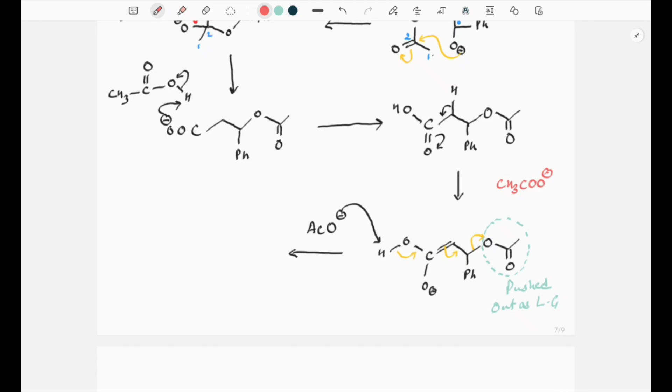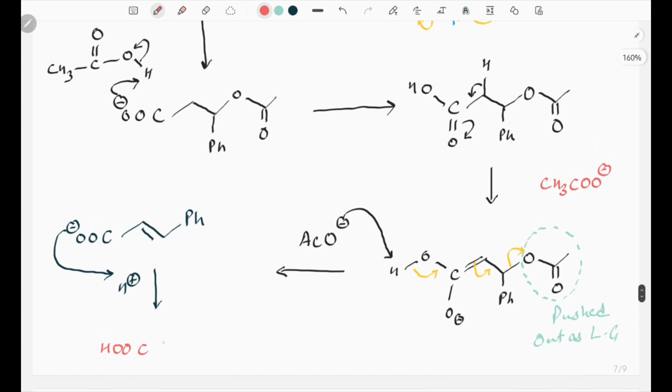What we are left with is COO minus. Now this is number one, number two, number three. This is our salt of cinnamic acid which is easily protonated further to give you the final product, which is trans cinnamic acid, or you can say alpha beta unsaturated carboxylic acid.